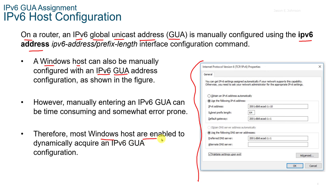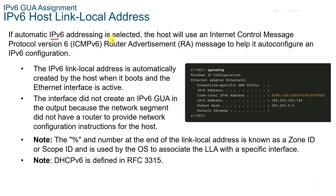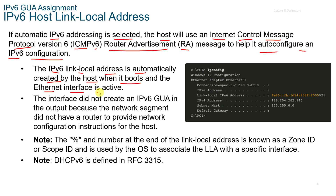Most Windows hosts are enabled to dynamically acquire a V6 GUA configuration. If automatic IPv6 addressing is selected, the host will use the Internet Control Message Protocol, or ICMPv6 Router Advertisement — the RA message — to help it auto-configure an IPv6 configuration. The V6 Link Local Address is automatically created by the host when it boots and the Ethernet interface becomes active, but the interface did not create an IPv6 GUA because the network segment did not have a router to provide the network configuration.